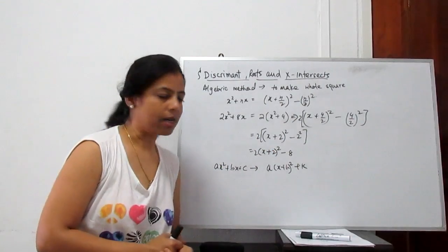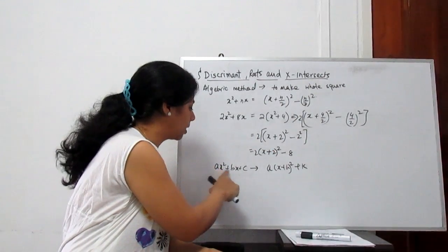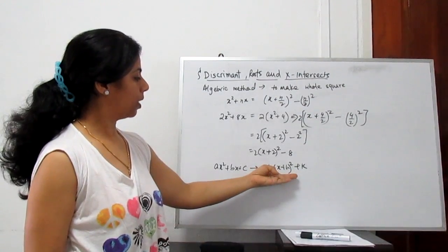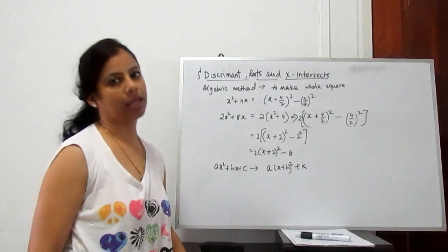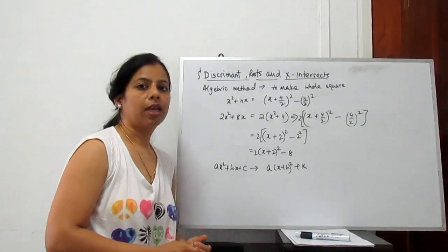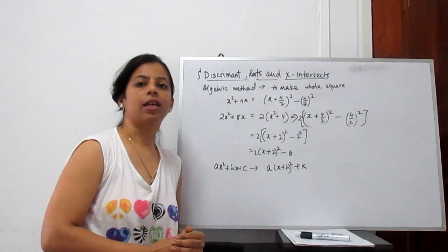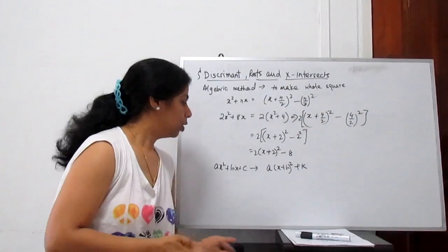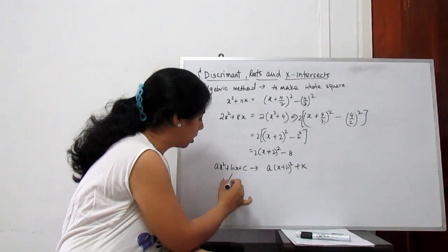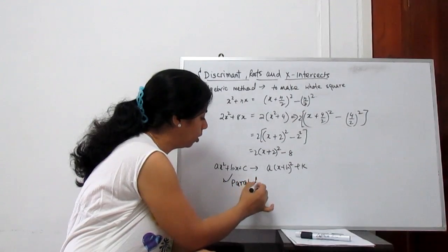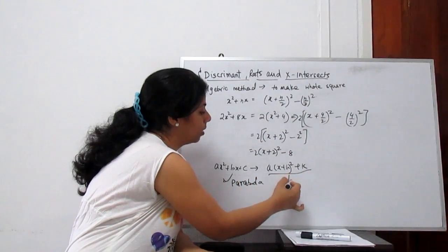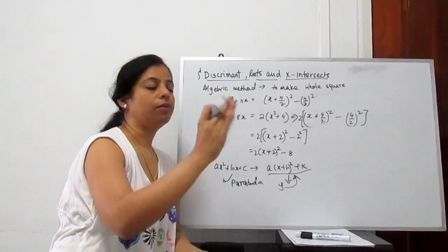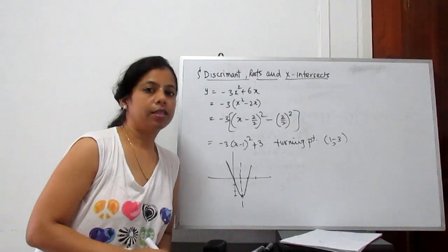Any quadratic equation ax² + bx + c can be transformed into the form a(x + h)² + k. With h and k we can easily trace the curve and find where it intersects or where it lies. Basically this is the equation of a parabola, so we trace it with y equal to this and we can know where it lies in which coordinate.